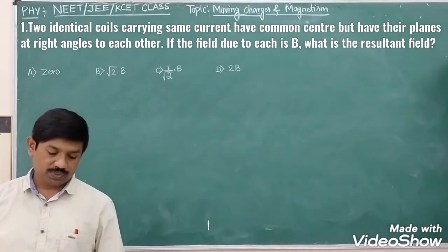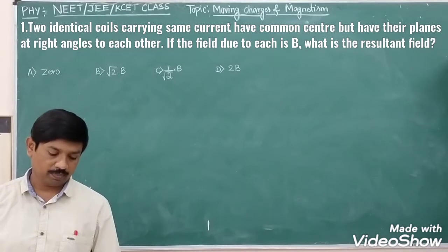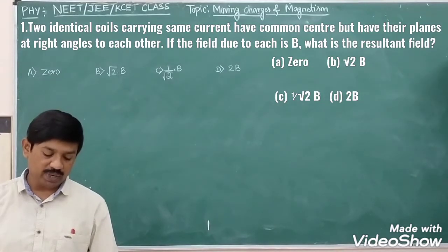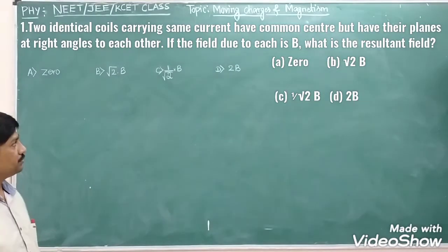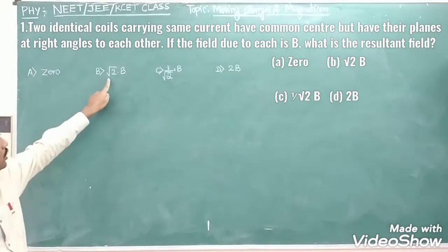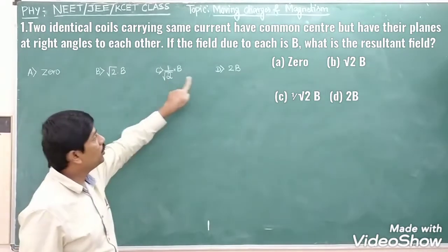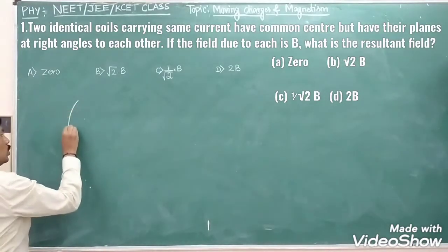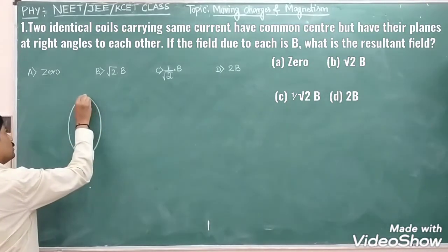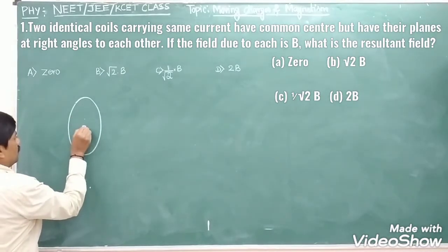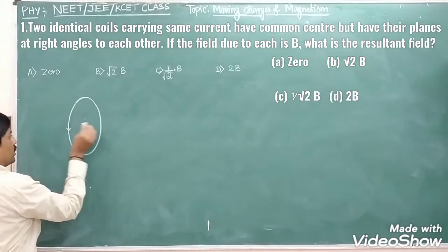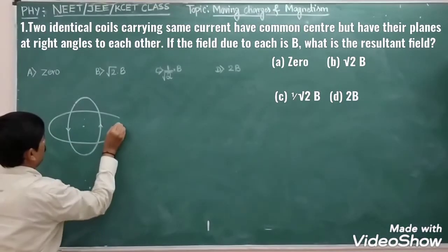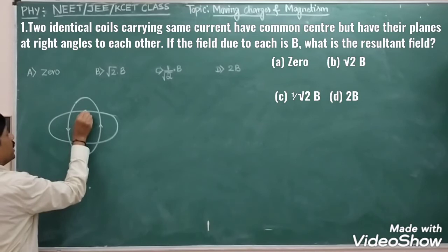Two identical coils carrying the same current have a common center but their planes are at right angles to each other. If the magnetic field due to each coil is B, what is the resultant field? The options are: 0, root 2 into B, B by root 2, and 2 into B. The two coils carry the same current but their planes are perpendicular to each other.